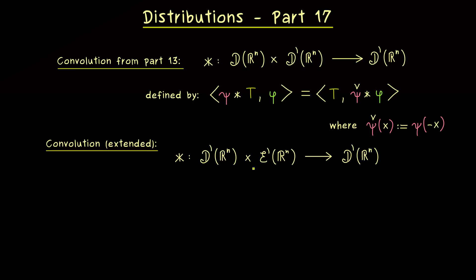The advantage of having a distribution with compact support is that we can substitute our test function, which also has compact support. However, this implies that we have to define the check operation — which we have for test functions — also for distributions. This will be our first definition: what is this reflection for distributions.